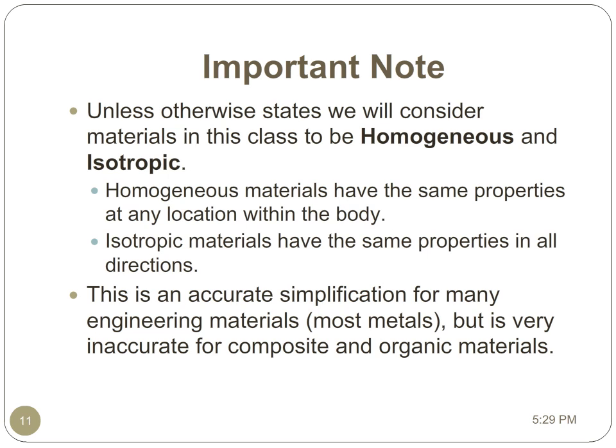It is also important to note that unless otherwise stated that most of the principles we're covering in this class are to be applied for homogenous and isotropic materials. Homogenous materials are materials that have the same property at all locations throughout their body and isotropic materials have the same properties in all directions.